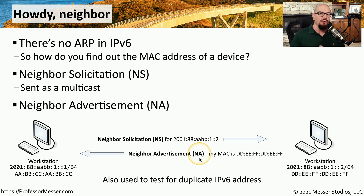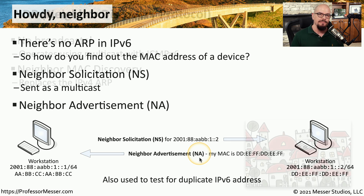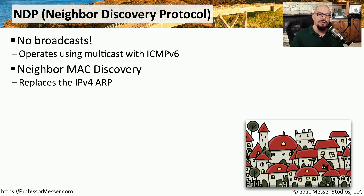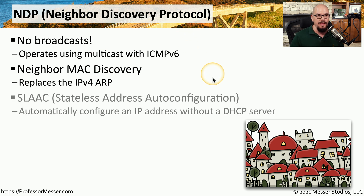This effectively replaces the functionality of the Address Resolution Protocol used in IPv4, updating it for the multicast capabilities of IPv6. This allows us to use more efficient protocols like multicast, and replace IPv4 ARP with the Neighbor Discovery Protocol, or NDP.